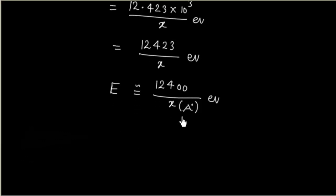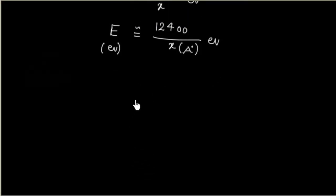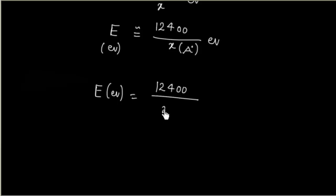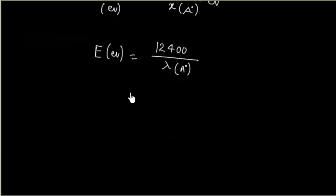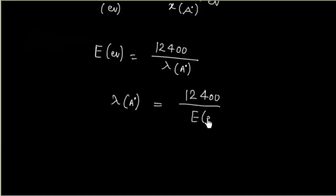As a thumb rule: if energy is in electron volts, E(eV) = 12400 / λ(Å). Conversely, if energy is given in eV and we want wavelength in angstroms, λ(Å) = 12400 / E(eV).